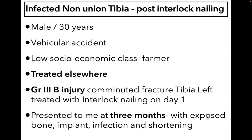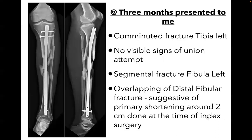This case involves a 30-year-old male who sustained injuries in a vehicle accident. He was from a low socioeconomic background, a farmer by profession. He was treated at a peripheral center and had a grade 3B open injury with a comminuted fracture of tibia and fibula, treated on day 1 with interlocking nailing. He presented to me at 3 months with exposed bone, implant infection, and shortening.